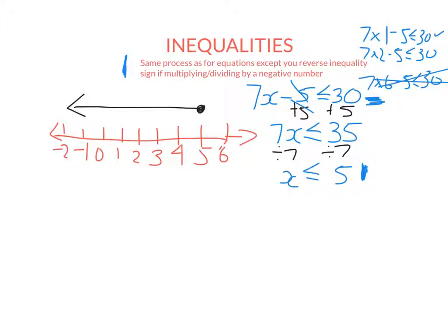So there is one exception. We do one thing slightly differently to equations. And that's when you have to reverse the inequality. So I'm going to show you an example of that now.